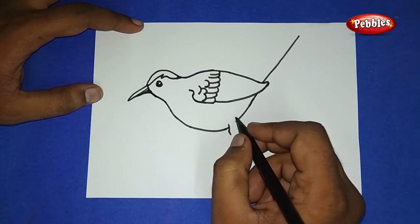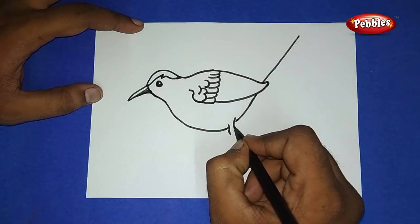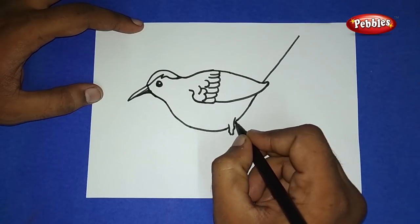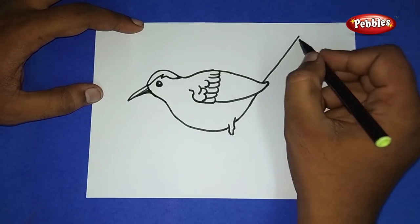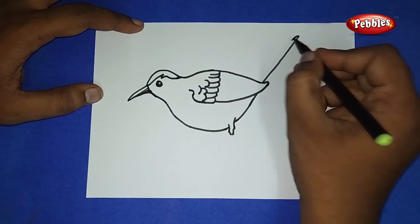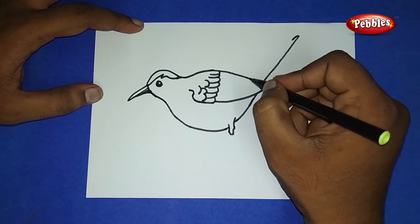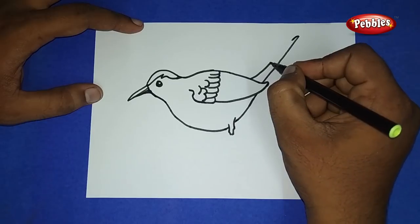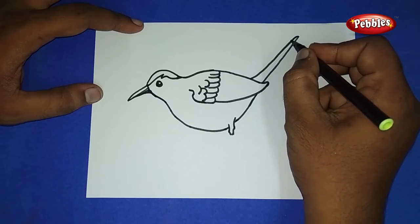Leave some gap at the side. Draw straight lines slantingly and join them together.